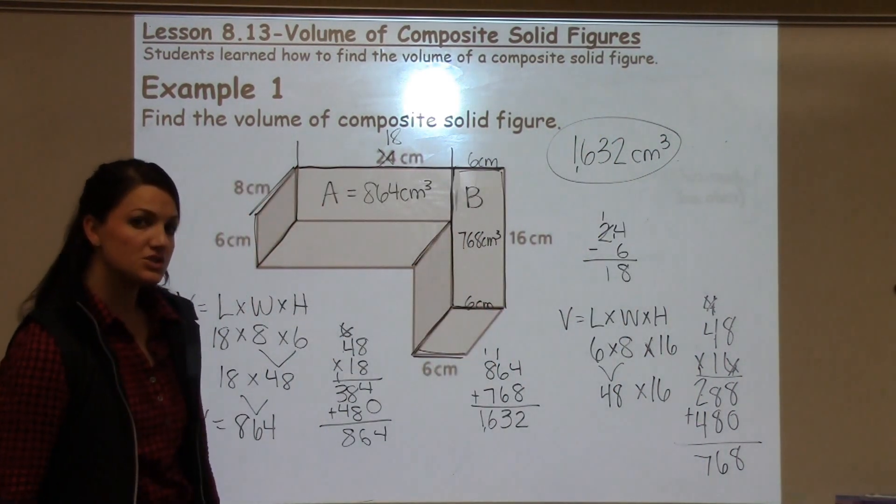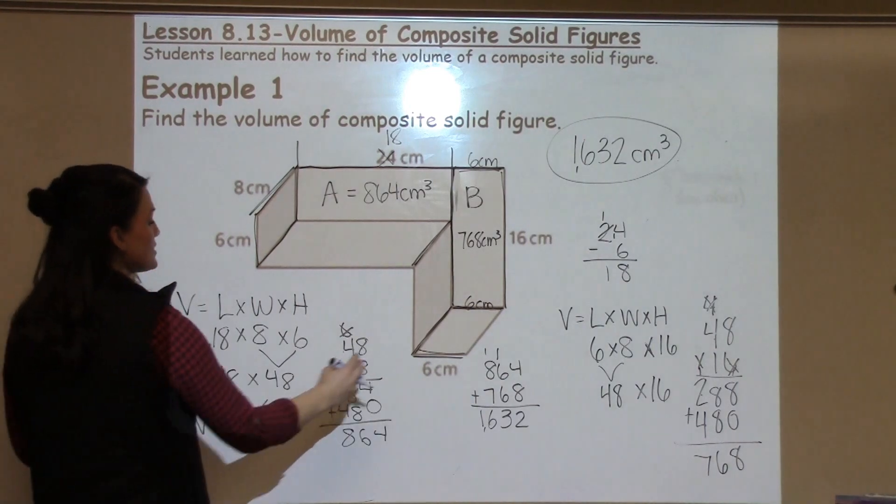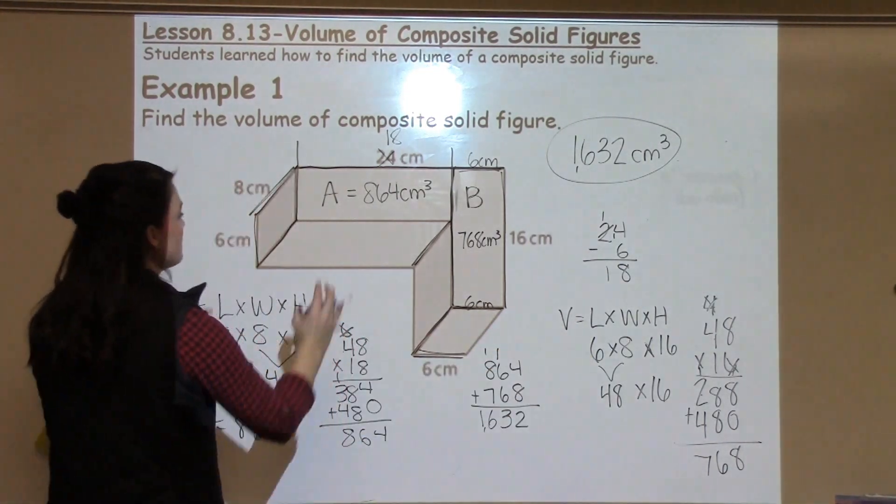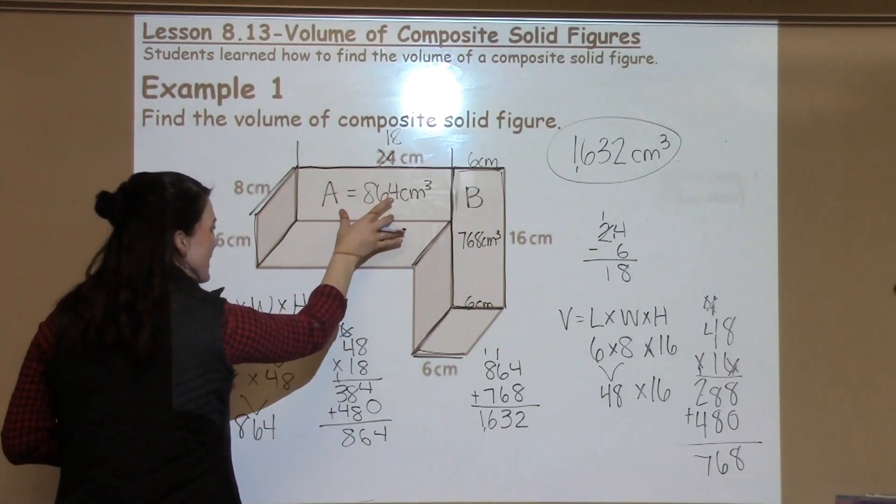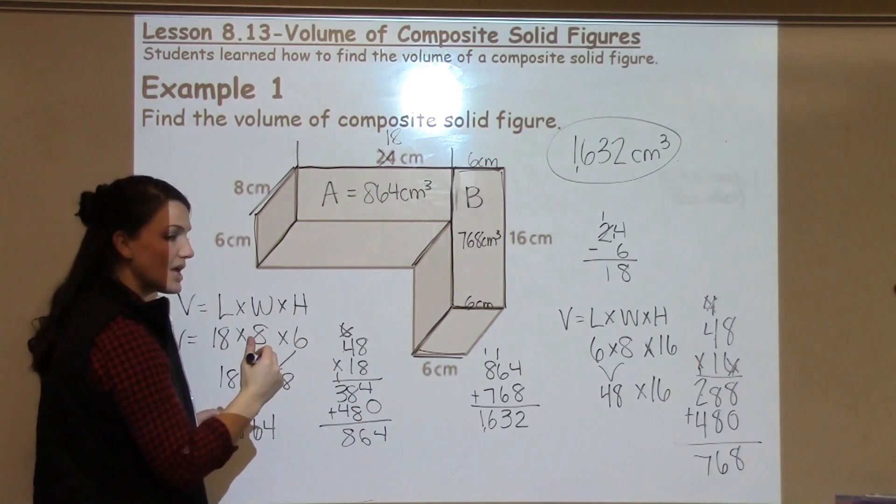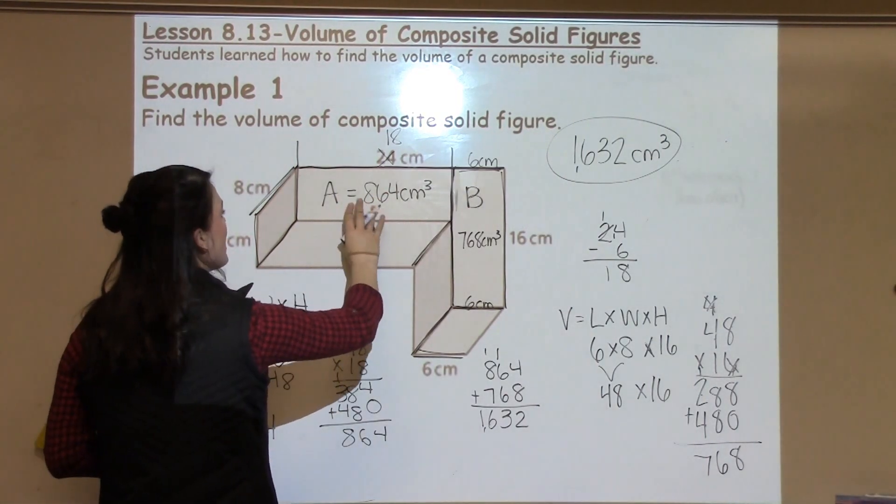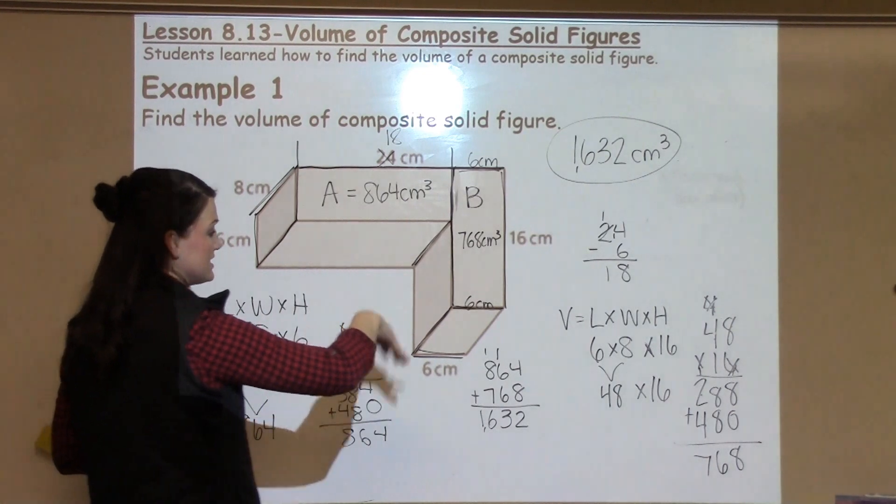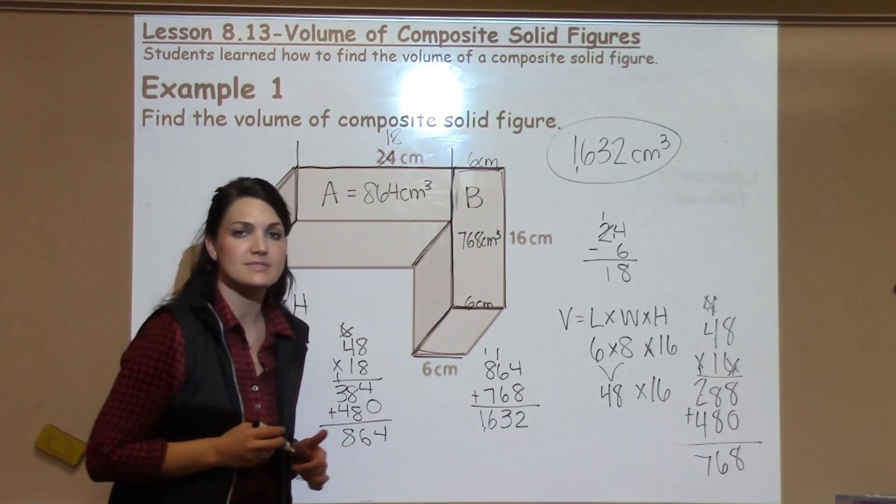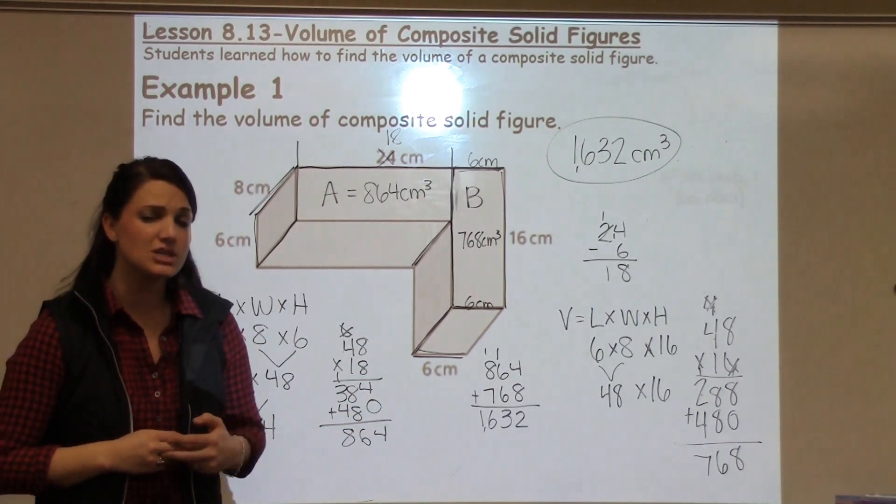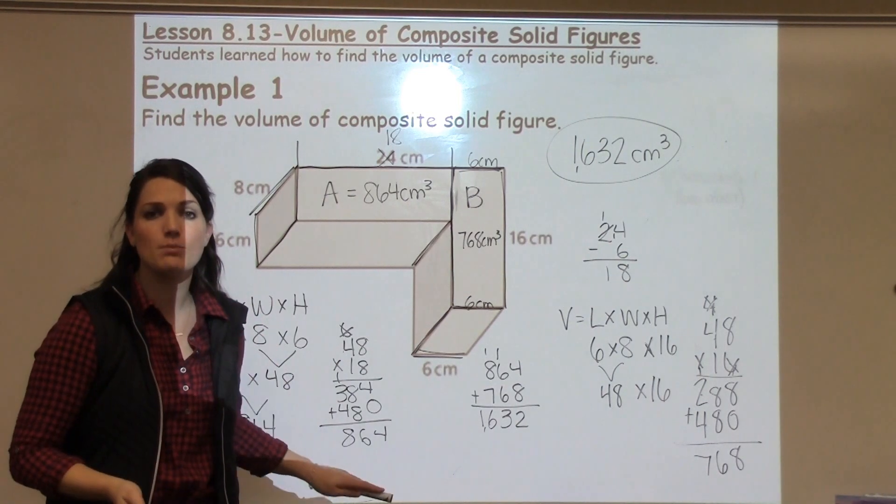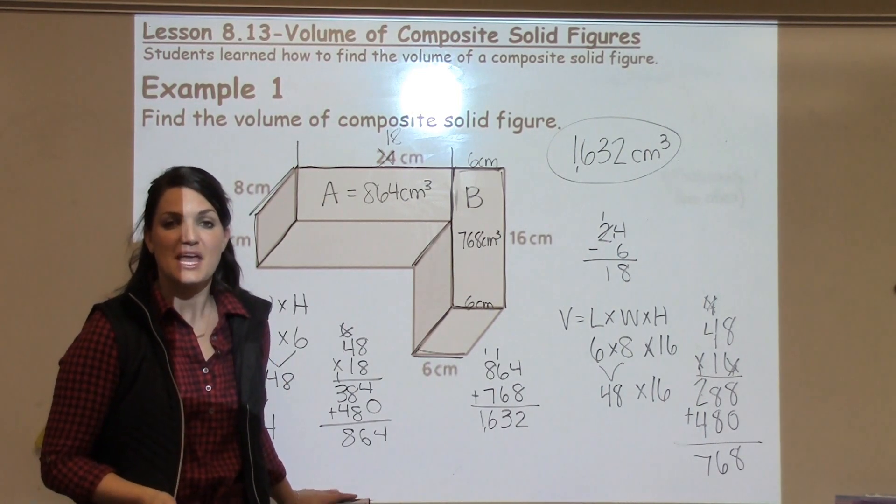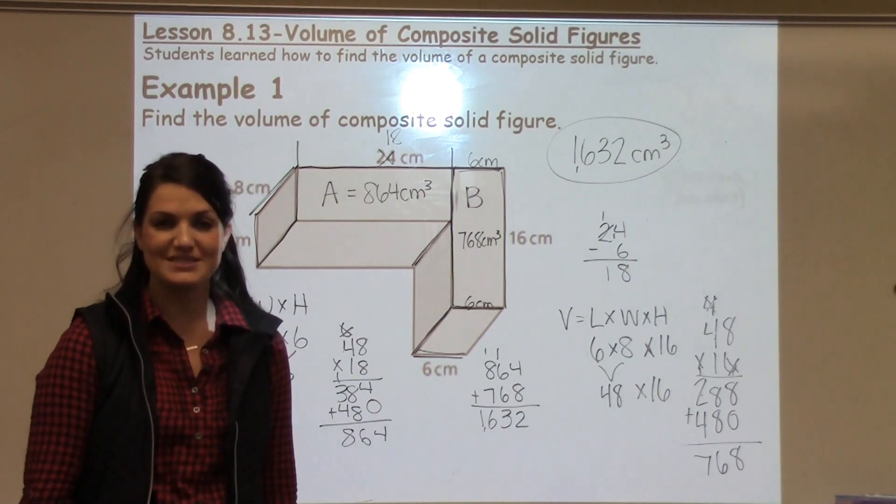A good strategy for your student is to have them work on two separate pieces of paper for the two separate shapes. Write the volume inside the shape that they're working on to help them know, okay, I'm done with shape A, let's move on to shape B, and then put them together at the end. Encouraging that organization of work is going to help them when they're working with composite figures. If you have any questions about this lesson, make sure to see your math teacher.